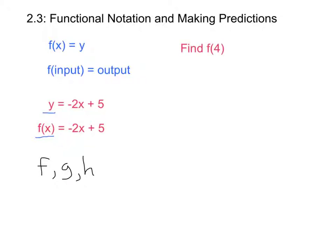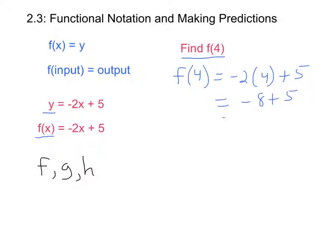Now let's see how this notation works. Let's say the question asks us to find f of 4. The number inside the parentheses is the x, so the 4 represents the x. That means we simply substitute 4 in for x in the function. We can write: f of 4 equals negative 2 times 4 plus 5. I've just substituted the 4 in for x, so that's negative 8 plus 5, which equals negative 3.